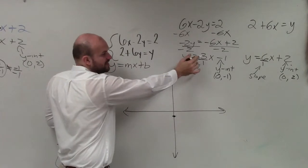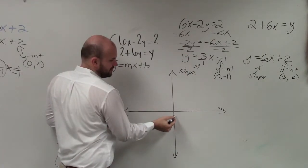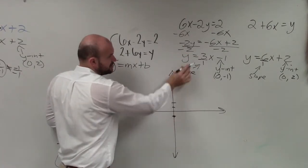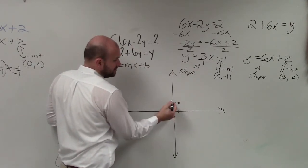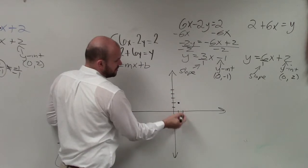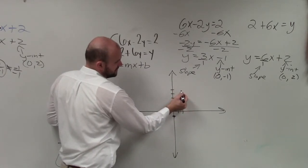And then my slope is change in y-coordinates is positive 3, so I go up 3: 1, 2, 3. Change in x-coordinates is positive 1, so I go over 1. So up 3, over 1. I can just continue doing that: 1, 2, 3, over 2. Do you guys follow me?